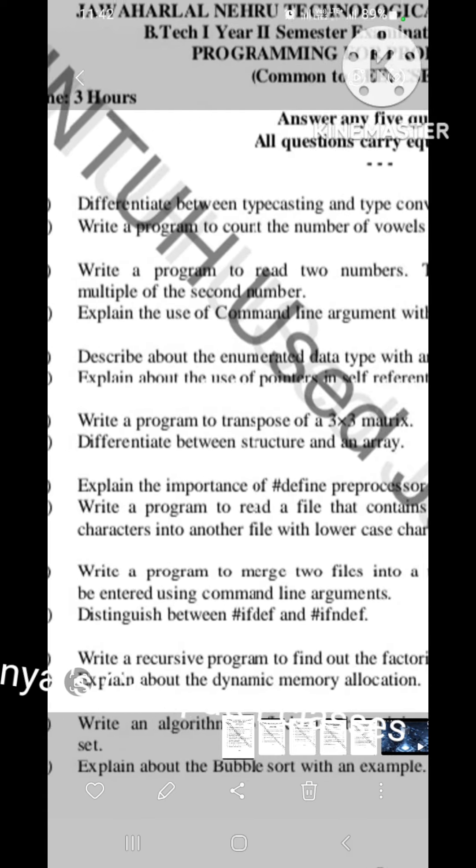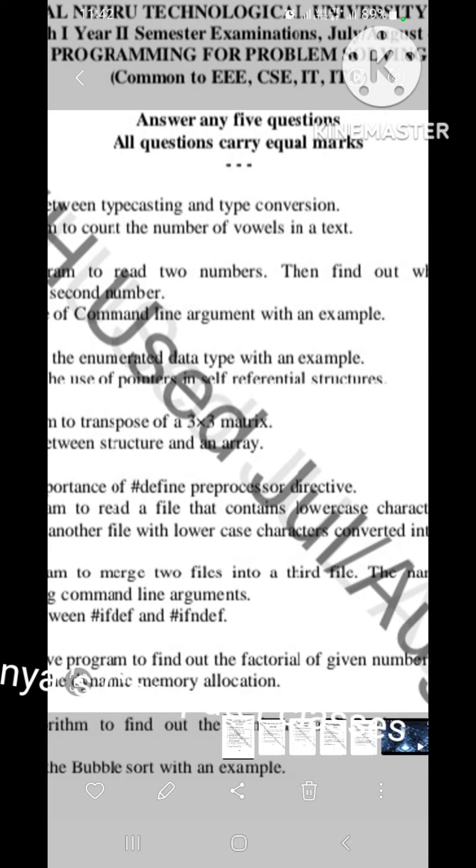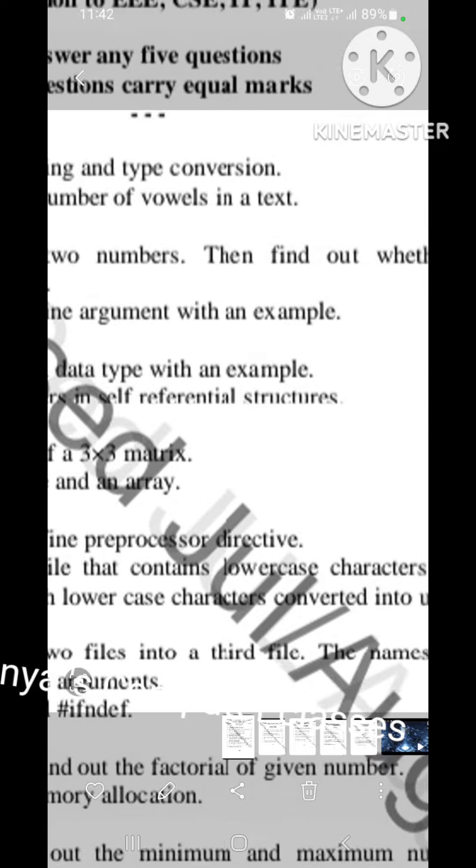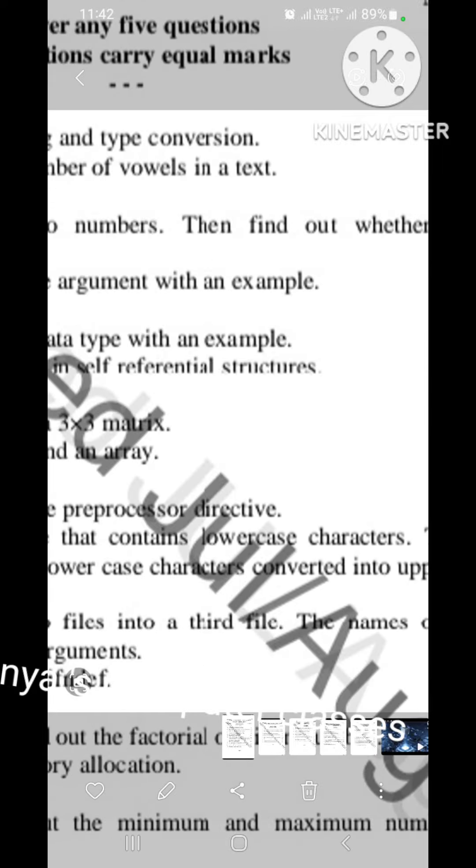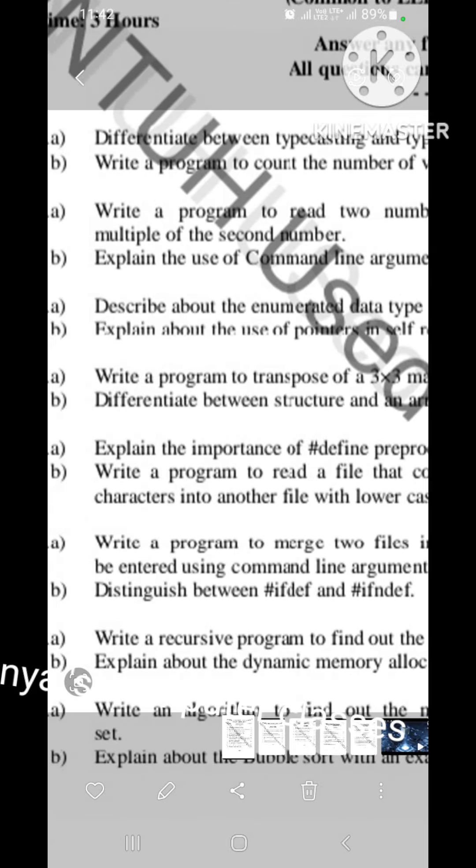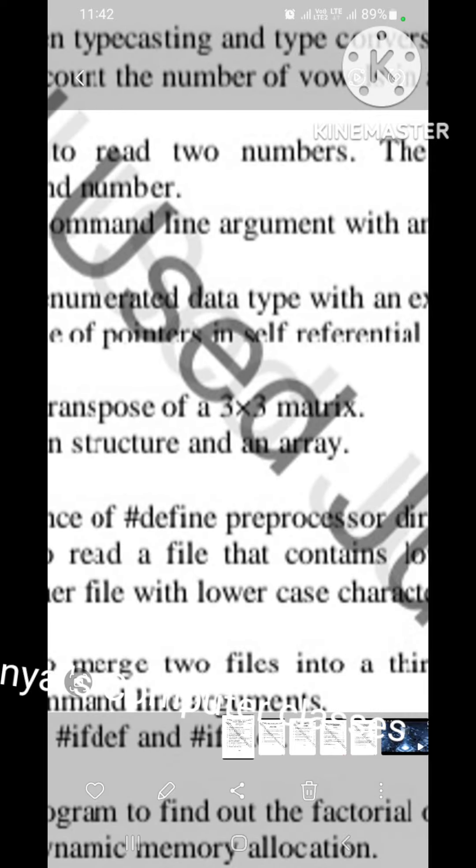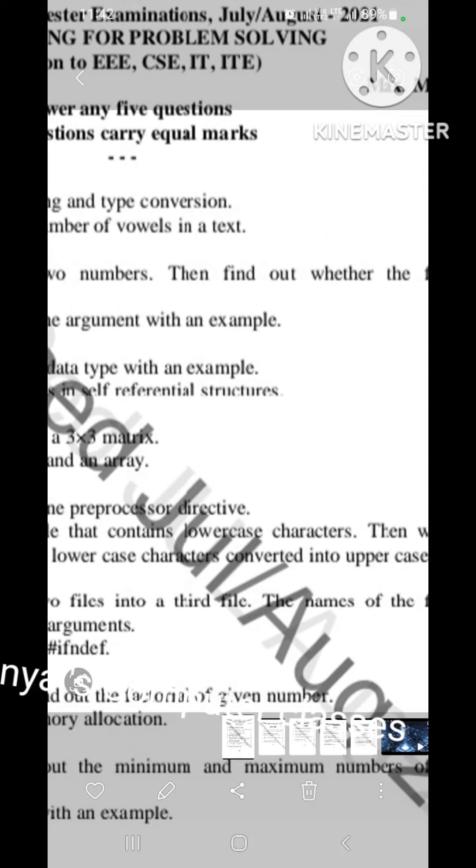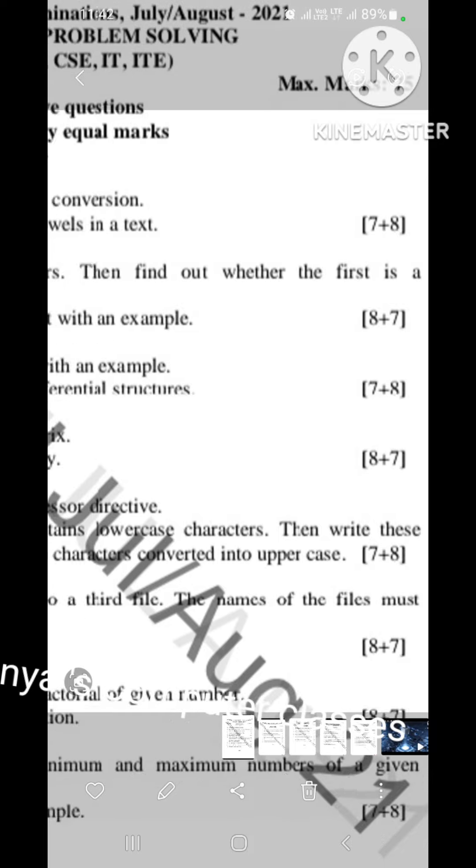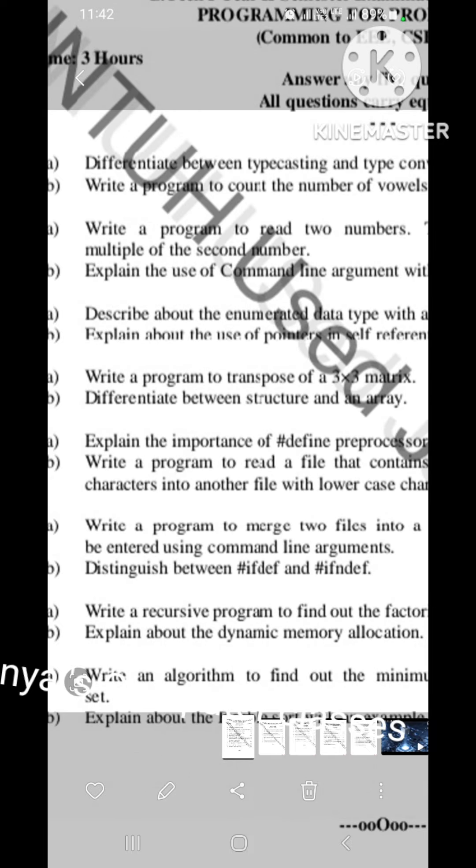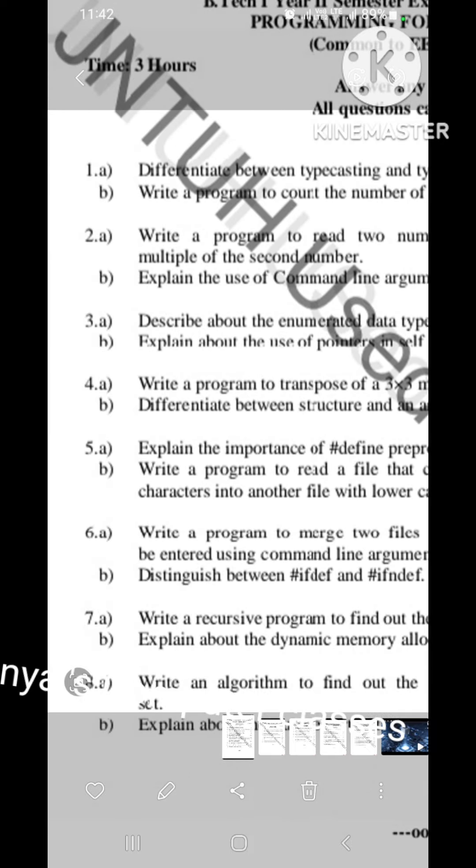3A is, describe about the enumerated data type with an example. See, again, now only I said, so again, enumerated data type question is came. That is for 7 marks question. Next one is, explain about the use of pointers in self-referential structure. In the structures concept, it came, use of pointers in self-referential structure, 8 marks. So, 7 plus 8, totally 15.